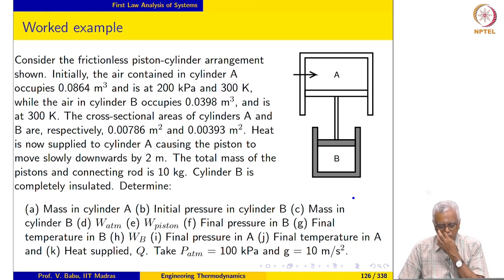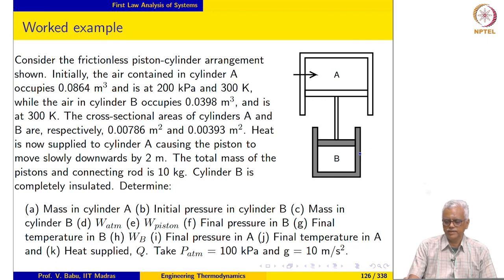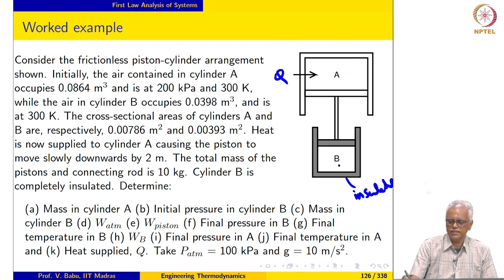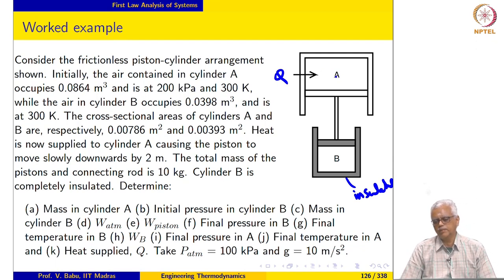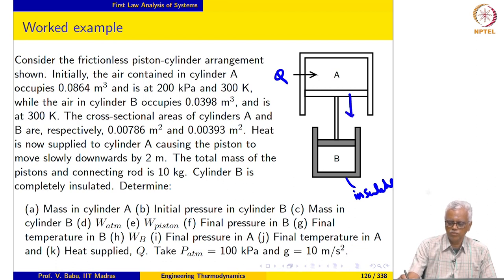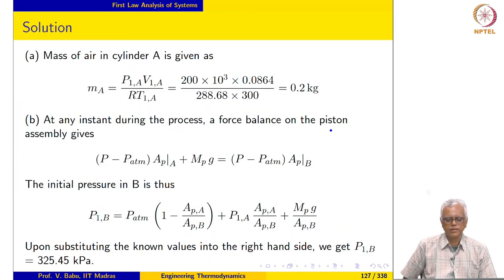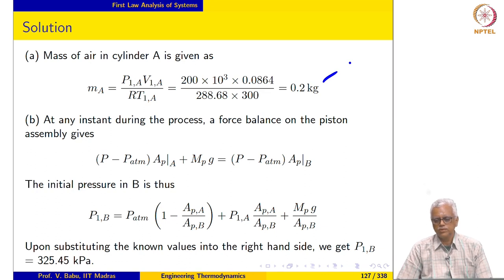The next example is straightforward but quite involved. We have two cylinders of different cross-sectional areas. The bottom cylinder — including its piston — is completely insulated. Heat is supplied to the air in cylinder A, and the piston moves slowly down by 2 meters. Areas, total distance, and mass of the piston assembly are given. The mass of air in cylinder A is calculated using the ideal gas equation of state and comes out to be 0.2 kilograms.